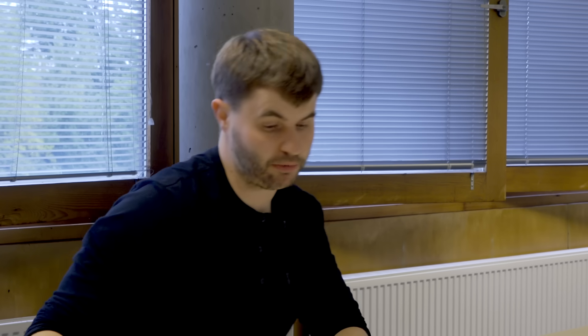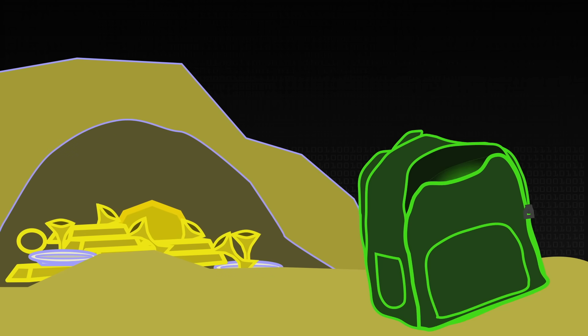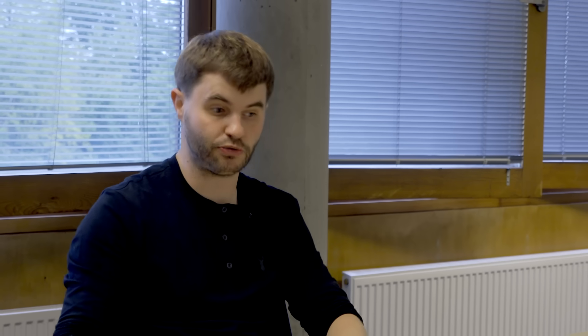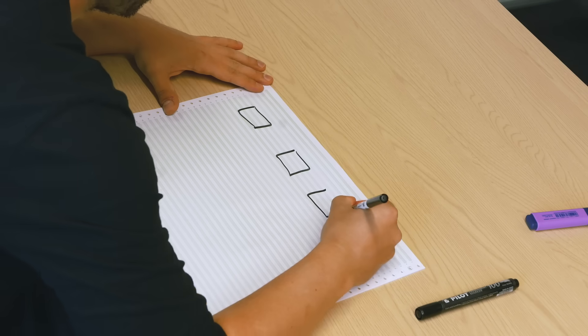A good way to think about the knapsack problem is an Aladdin's cave full of treasure. If you're in the desert and you had one rucksack, you'd have to fill it with the most valuable items and that's a very good representation of this exact problem.